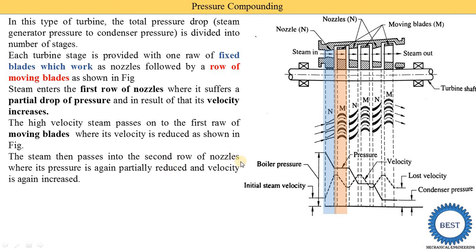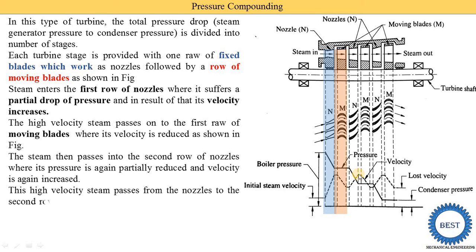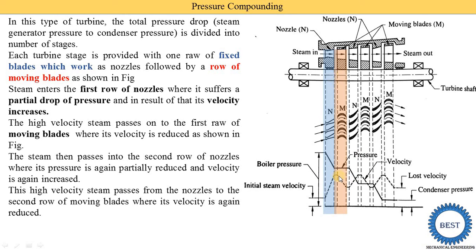In the second row of nozzles, the pressure is again partially reduced and the velocity is again increased. You can see the pressure line going down and the velocity line increasing. Then the steam is again supplied to the second row of moving blades where its velocity is again reduced. Here, pressure is constant and velocity is reduced. Then it is supplied to the third stage and the same process is carried out. If there are five stages, the same process continues.